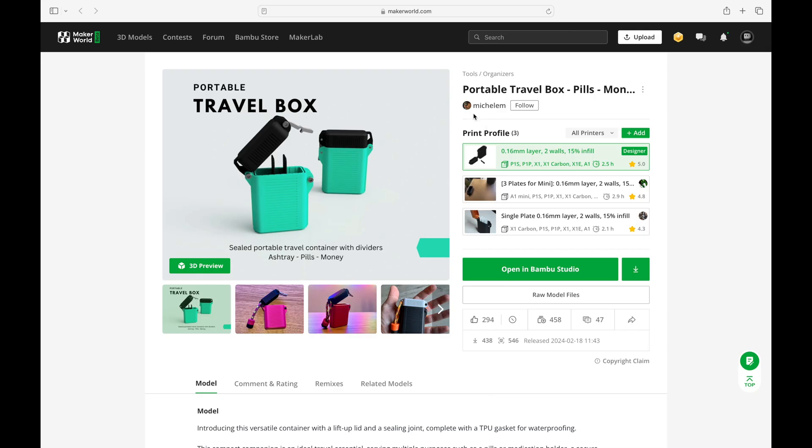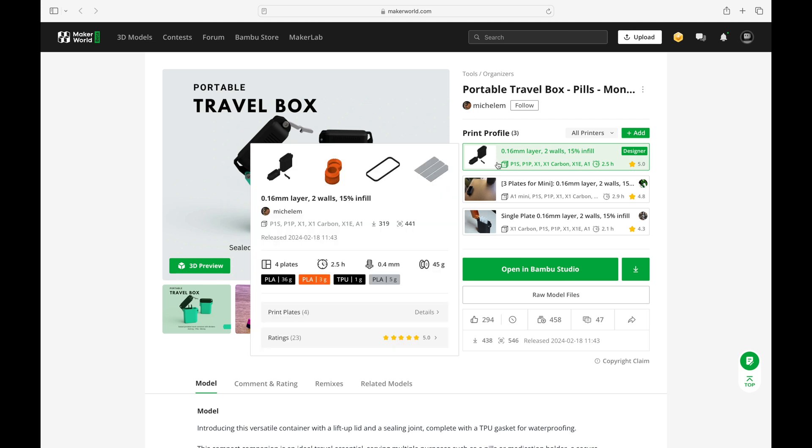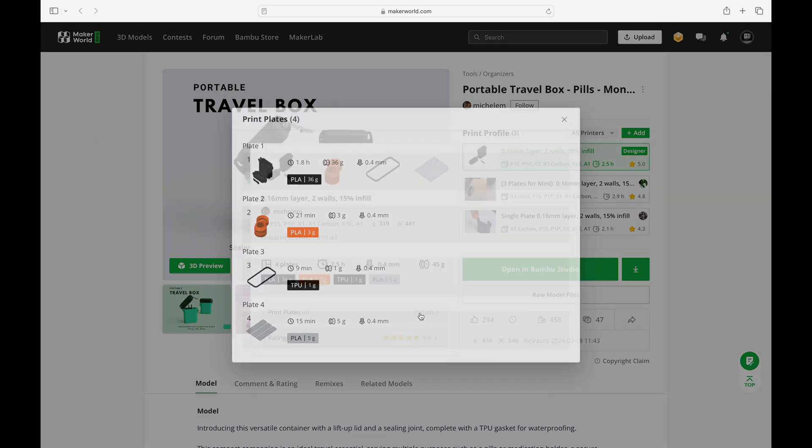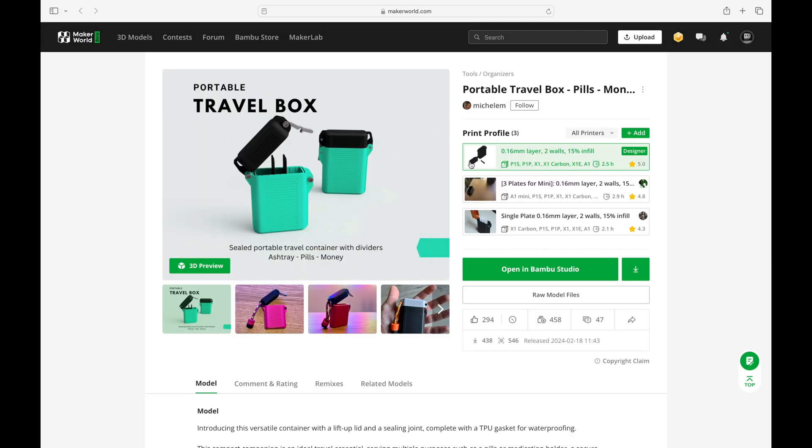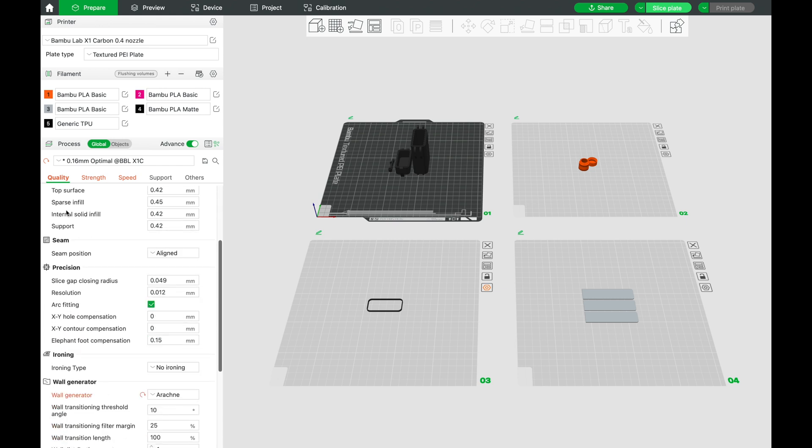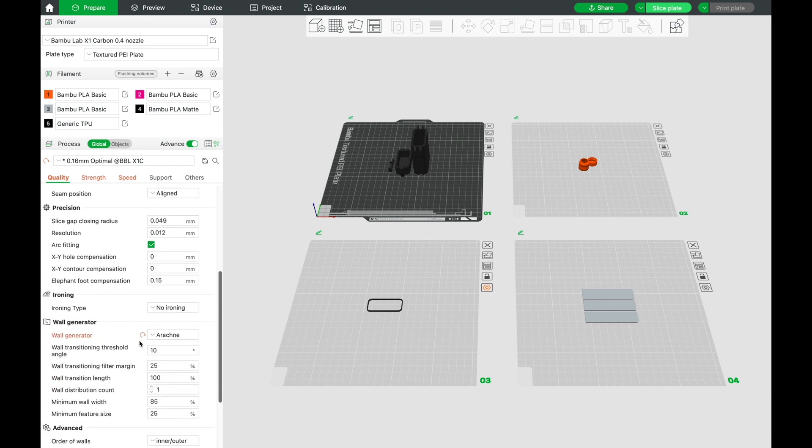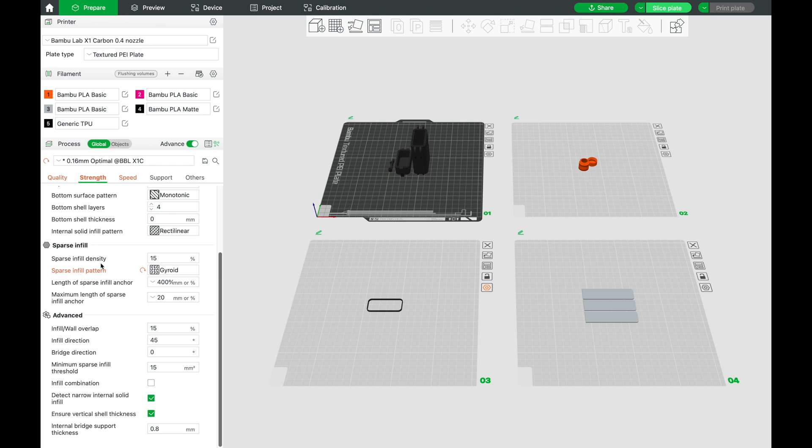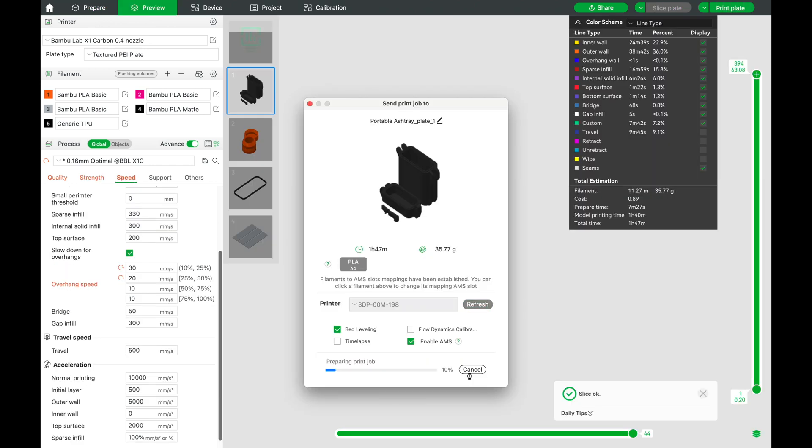Our fifth and final case we'll be taking a look at by Michelin is a bit different than the others, but still shares similar features in that it latches and has a TPU seal, so I wanted to see how this one compared. The files were a breeze to download for the first print profile, and due to the smaller size of this case and the designer's recommendation, we opted to go with two walls and 15% infill, unlike the other cases we printed.